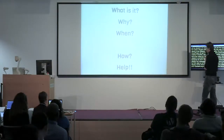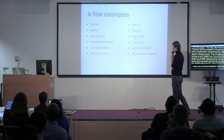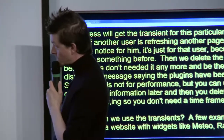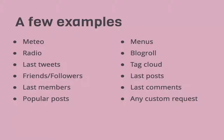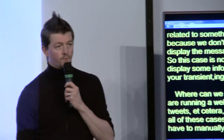Where can we use transients? A few examples: if you're running a website with widgets like Meteo, Radio, or Last Tweets, you may need to use a transient. Do you have to manually delete your transient? Do you have to add a time frame? And if so, a long one or a short one?